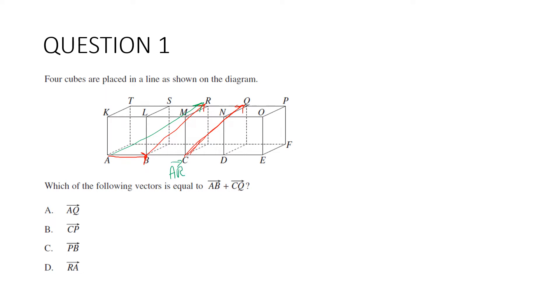So we can at least wipe out D because that's negative AR. Let's have a look at these different options. AQ, from A all the way to Q, no, it's not that. From C to P. Could well be. Yes, that's the answer. Can you see that's the same vector? So our answer here is B.